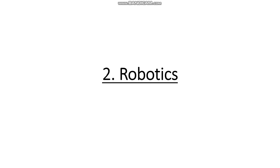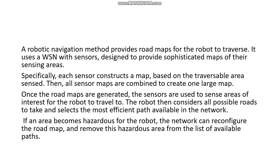The second topic is robotics navigation, which is my favorite. We all use Google Maps — the robotic navigation method provides road maps for robots, and Google Maps is also a type of robot. It gives you the complete path to wherever you want to go. It uses a WSN with sensors designed to provide sophisticated maps of the sensing area. Each sensor constructs a map of a particular area, and all maps from each sensor are connected to form one large map.